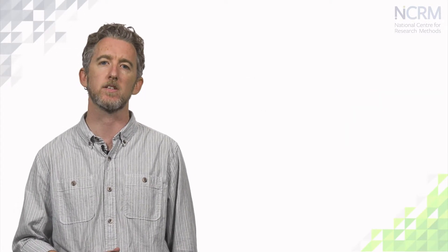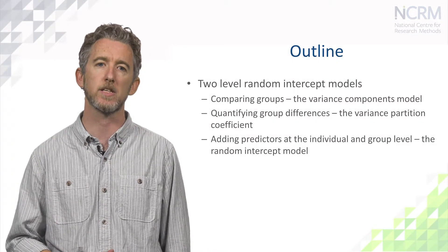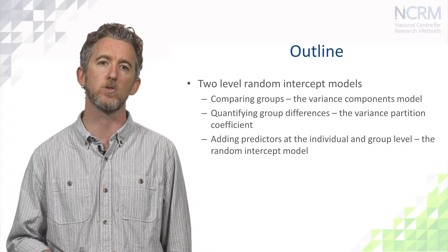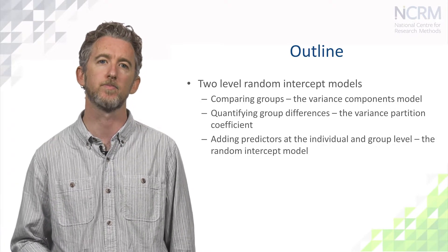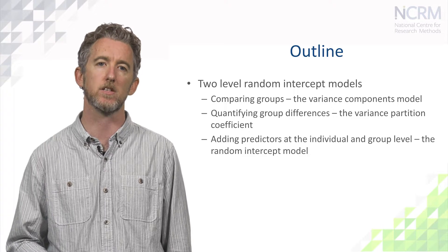I'll start by introducing the simplest multilevel model for continuous data, a two-level model with no explanatory variables, sometimes called the variance components model. I'll then outline how to quantify group differences using the variance partition coefficient.